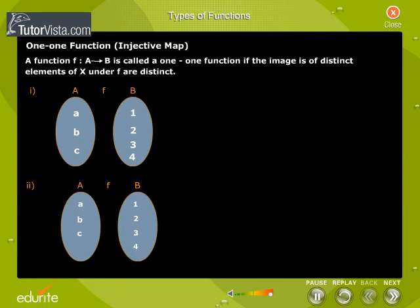Therefore, f of x1 is equal to f of x2 which implies x1 is equal to x2. Every element of A has only one element in B as a pre-image. Therefore, it is a one-to-one function.